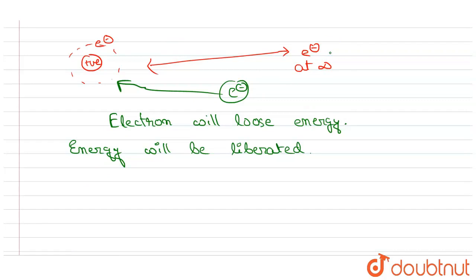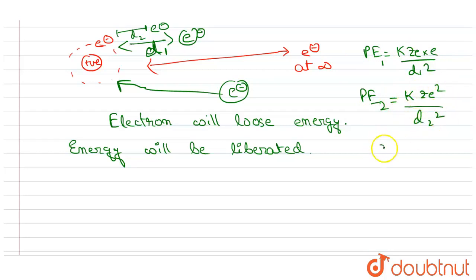It's actually electrostatic attraction. If I take at distance d, suppose distance d1, and at distance d2, if I move the electron, then potential energy will be given by kZe/d1 squared at position d1, and potential energy at position d2 is kZe/d2 squared. Since d1 is greater than d2, potential energy at 1 is less than potential energy at 2.